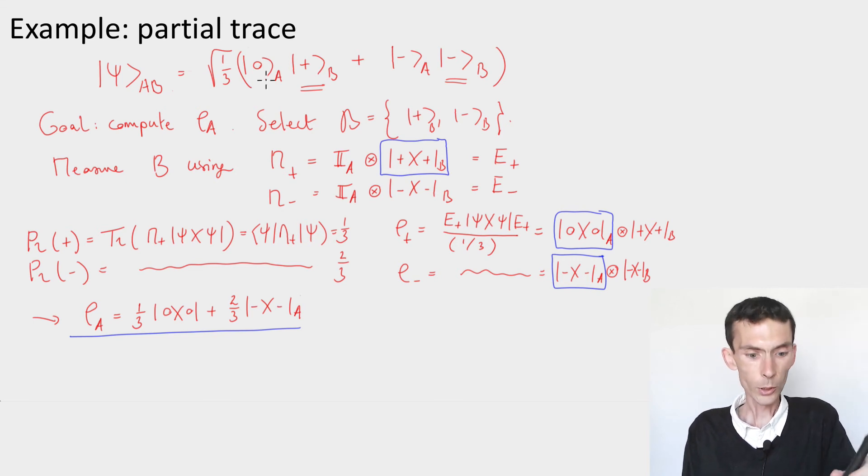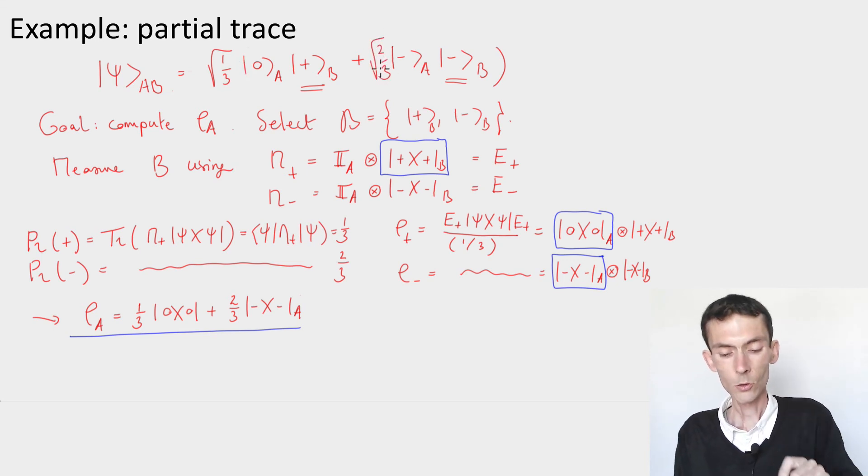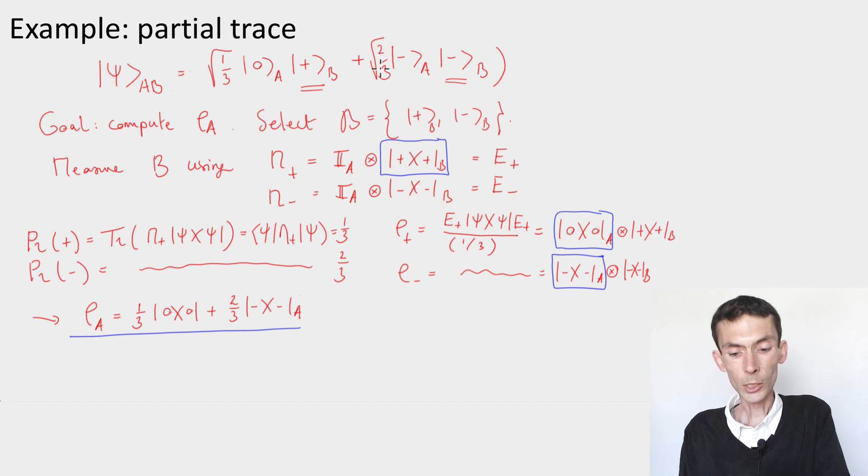And then, I'm sorry, I realized I made a little typo here, forgot to write the two-thirds amplitude. So let's have a root two-thirds here. And then if we obtained a minus, it was projected down to a minus,